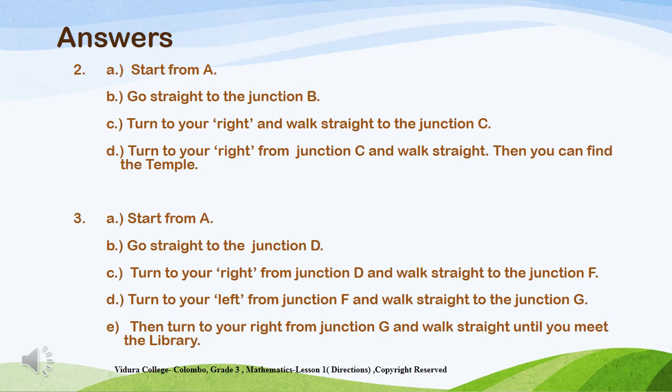Question number 3: How do you go to the library from A? First, start from A. Then go straight to Junction D. Turn to your right from Junction D and walk straight to Junction F. Turn to your left from Junction F and walk straight to Junction G. Then turn to your right from Junction G and walk straight until you meet the library.